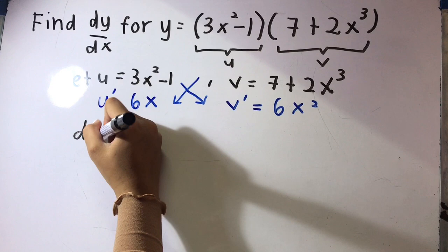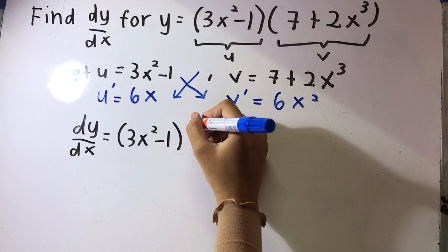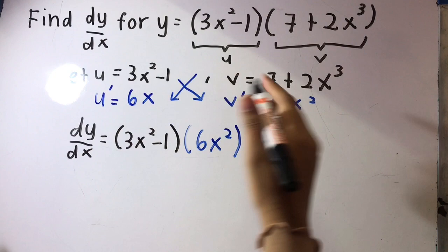Now we substitute into the formula: 3x² - 1 times 6x² plus 7 + 2x³